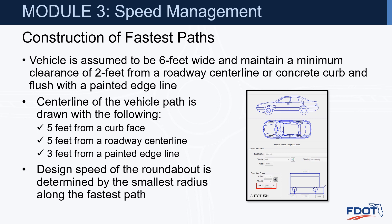For construction of the fastest path, a vehicle is assumed to be six feet wide and maintain a minimum clearance of two feet from a roadway center line or concrete curb, and flush with a painted edge line. The center line of the vehicle path is drawn using five feet from a curb face, five feet from a roadway center line, and three feet from a painted edge line. The design speed of the roundabout is determined by the smallest radius along the fastest path.